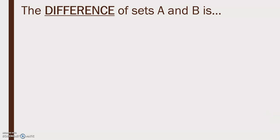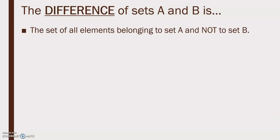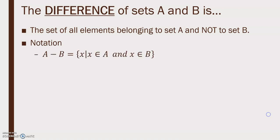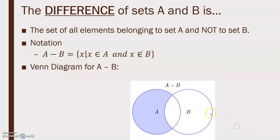The difference of sets A and B is the set of all elements belonging to set A and not to set B. The notation is A minus B. In the Venn diagram for A minus B, think about A and then take away the part that is in B — take away the intersection.